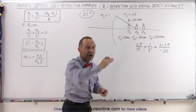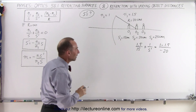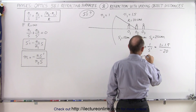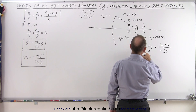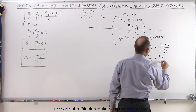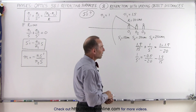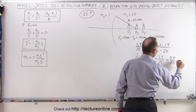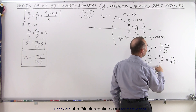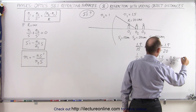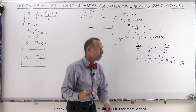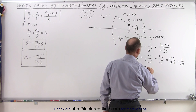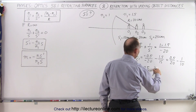Now let's figure out S prime. Simplifying and moving terms to the other side, we get 1 over S prime equals 1 minus 1.5, which is minus 0.5, divided by minus 20, then minus 1.5 over 15. We can simplify: canceling out the negatives gives 0.5 divided by 20, and since 1.5 over 15 equals 1 over 10, that becomes minus 1 over 10. Finding the common denominator of 20, we have 0.5 over 20 minus 2 over 20.